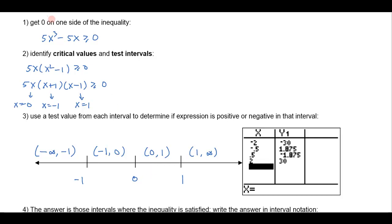What I want to do is choose a test point out of each one of these intervals. I choose negative 2 from the first interval. I need a number between minus 1 and 0, so I choose negative one-half. Between 0 and 1 I choose one-half, and from the last interval I choose 2.